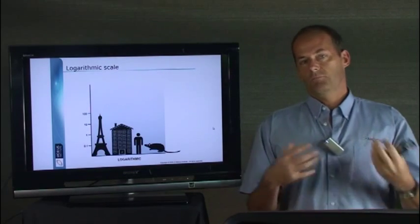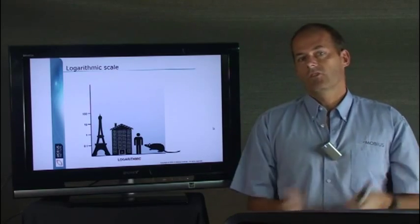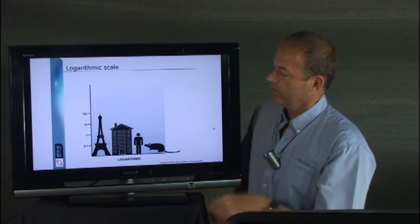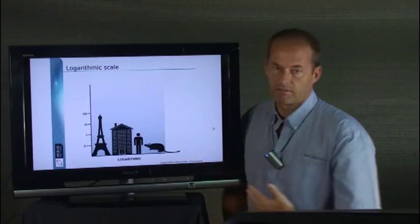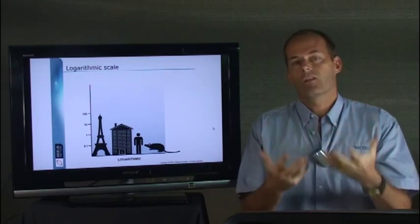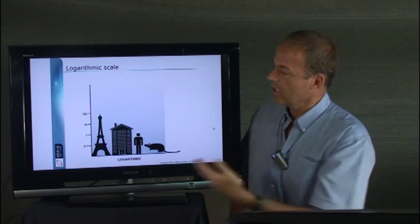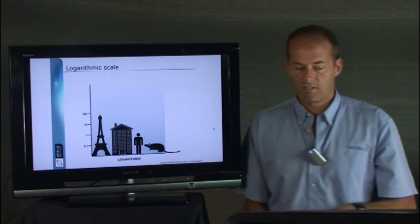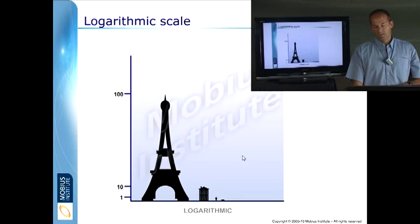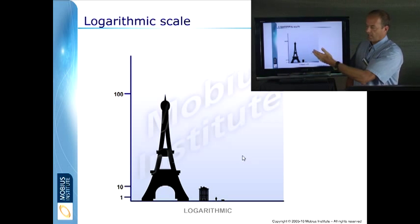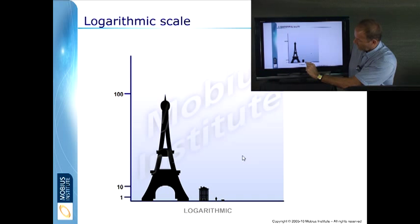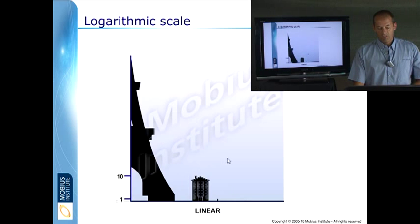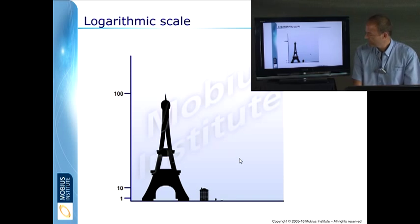Hopefully this demonstration will explain the benefits of linear and log and what the difference or the benefits of log but the difference between them. Here we have the Eiffel Tower, a building, a man and a mouse. And I've chosen those four things because roundabout they are in fact. The tower is 10 times as big as the building, which is 10 times as big as the person, which is 10 times as big as the mouse. Now, on the one extreme, if I want to see the tower, I can see the building and I can tell there is a little man next to it and we can just see a mouse. If I look at them all on the same scale, it is very difficult to tell.